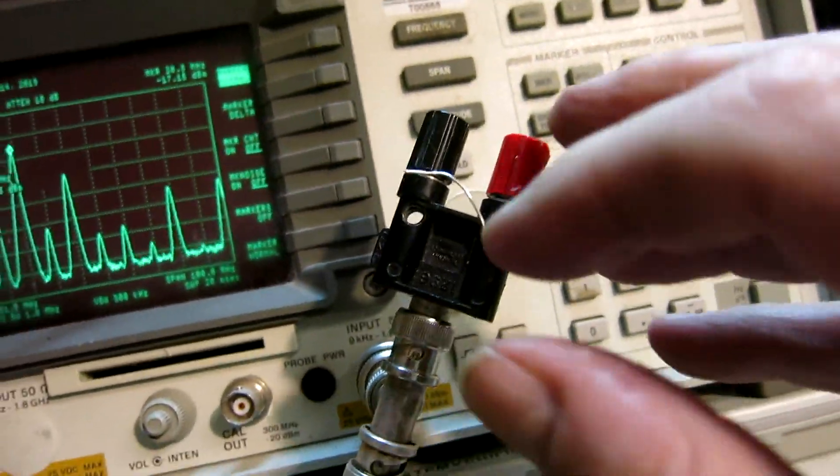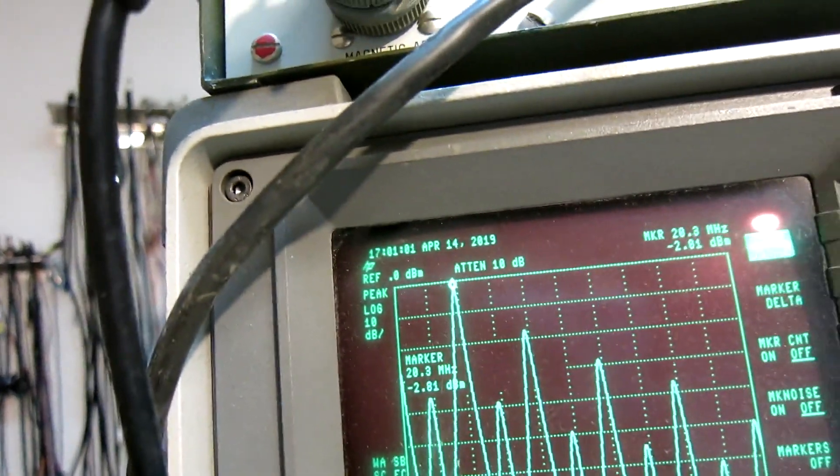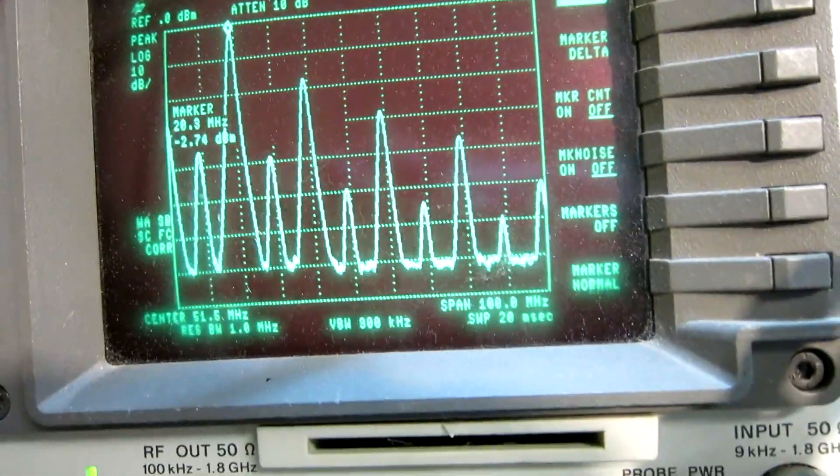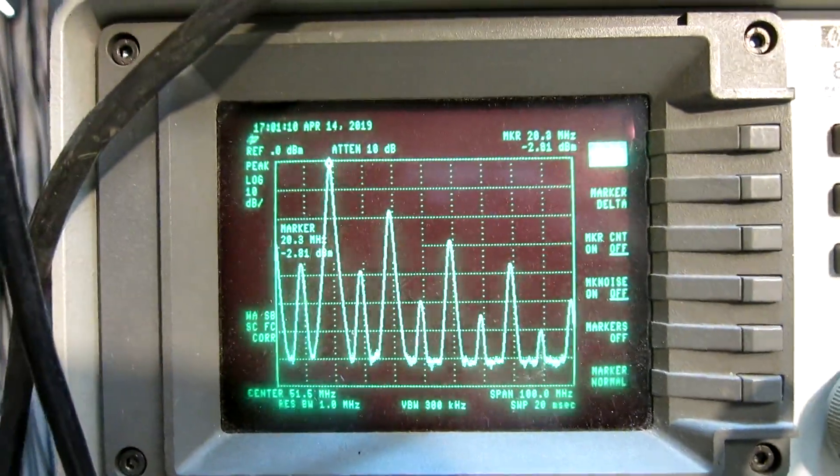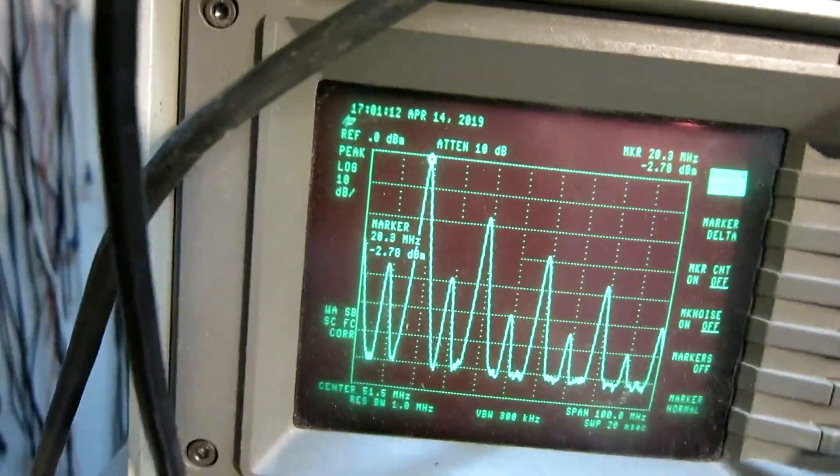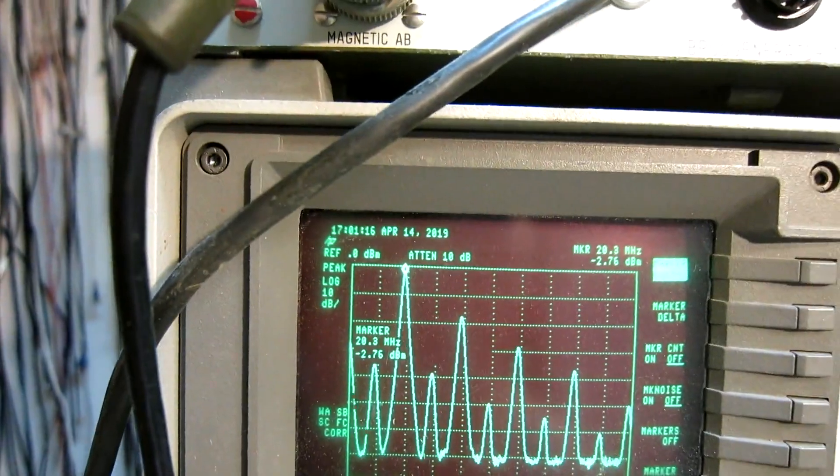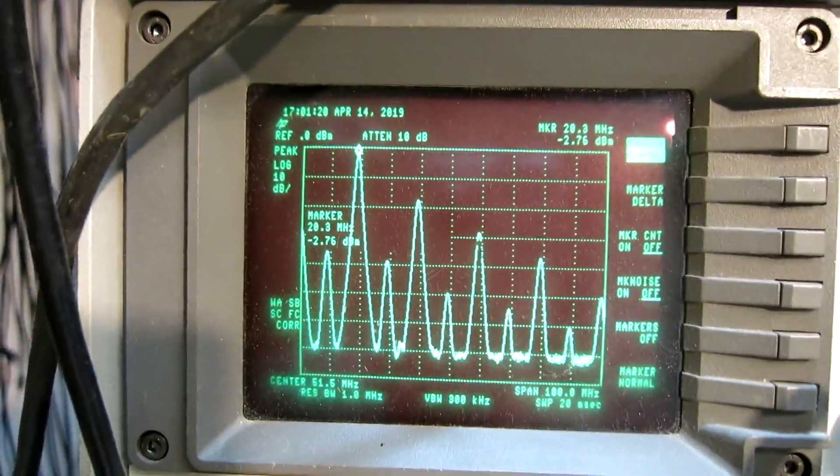So if I connect an inductor in parallel here, the signal becomes much stronger. We have to allow the DC current to flow. And now the level is minus 2.76, or minus 2.8, for the 20 MHz signal when I send in 10 MHz at plus 7 dBm.